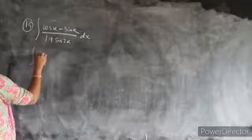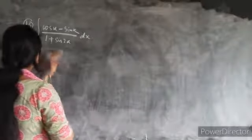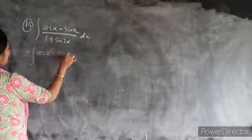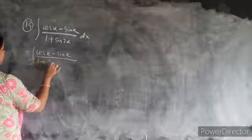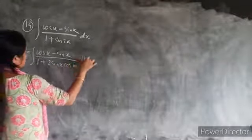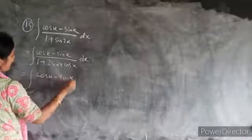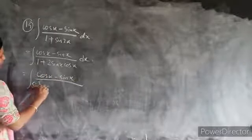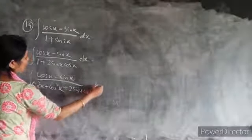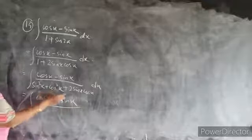Question 14 is the integration of (cosx minus sinx)/(1 plus sin2x) dx. We note that 1 plus sin2x equals sin²x plus cos²x plus 2sinx cosx, which equals (sinx plus cosx)². So the integrand becomes (cosx minus sinx)/(sinx plus cosx)² dx.